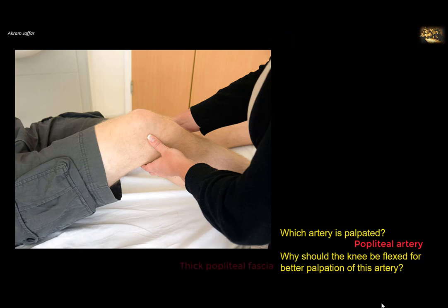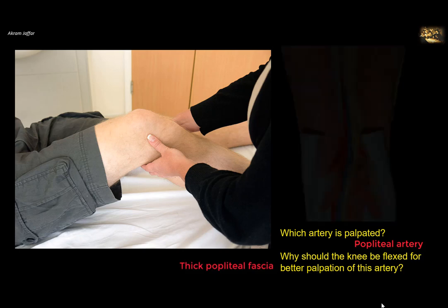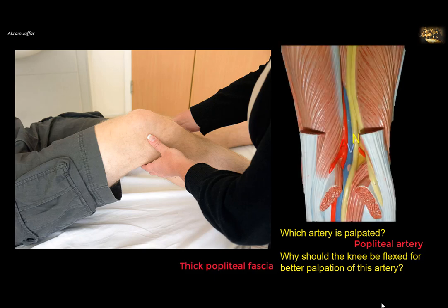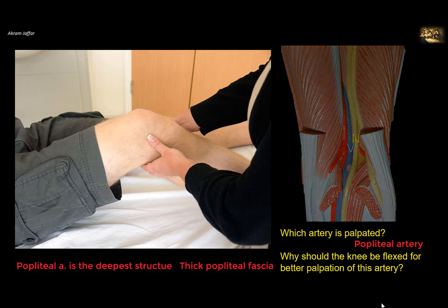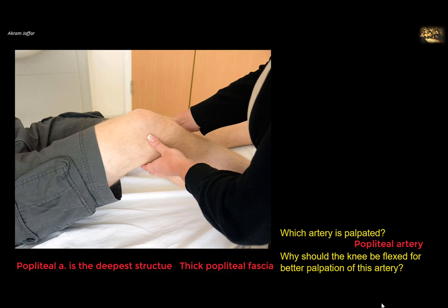The second reason is that the artery is very deep within the fossa. The neurovascular bundle in the fossa is formed by the popliteal artery, popliteal vein, and the tibial nerve from front to back. So the deepest structure in the fossa is the popliteal artery. That's why its pulsations can only be felt by deep palpation, and the artery is compressed against the tibia.